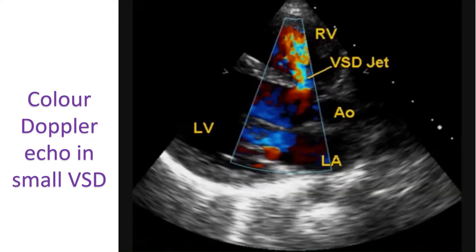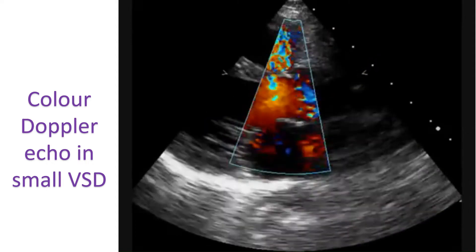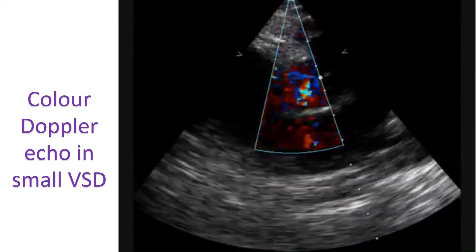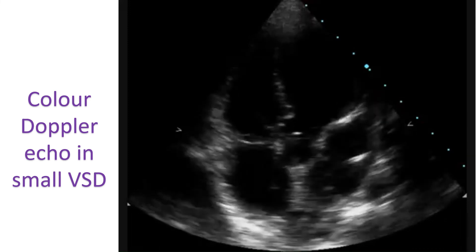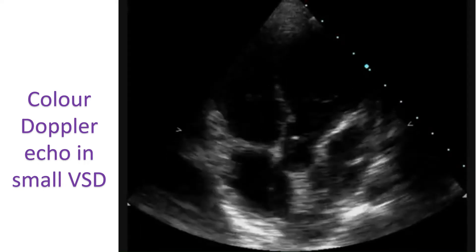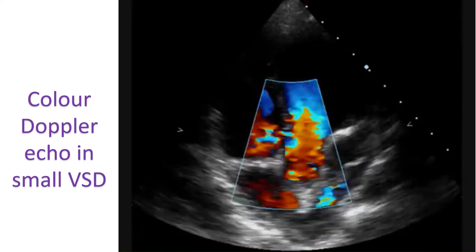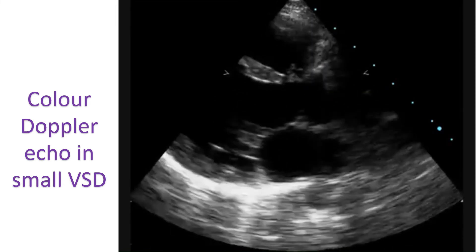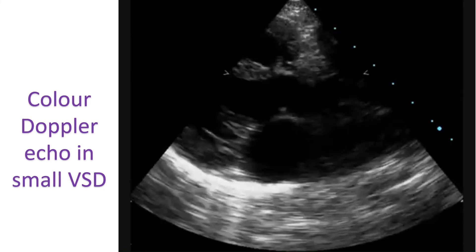A mosaic colored jet on color Doppler echo is easily seen. For example, when the VSD is small, the pressure difference between the right and left ventricles is high. This produces a turbulent high velocity jet which can be easily seen on color Doppler, but it may be difficult to see a small defect by echocardiography without Doppler.